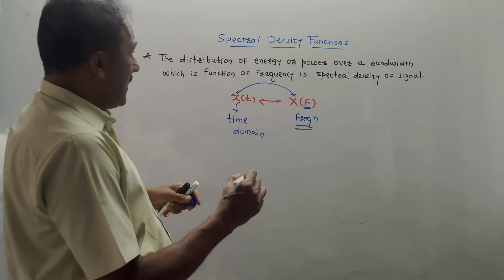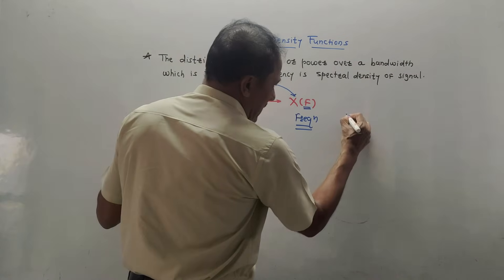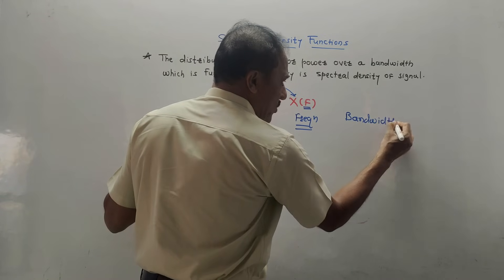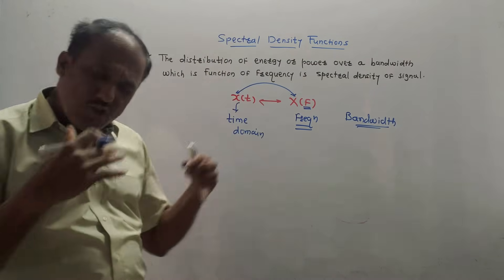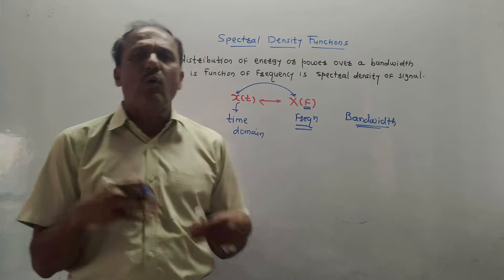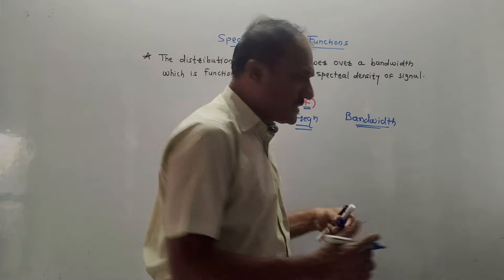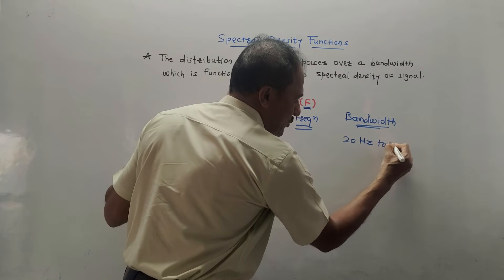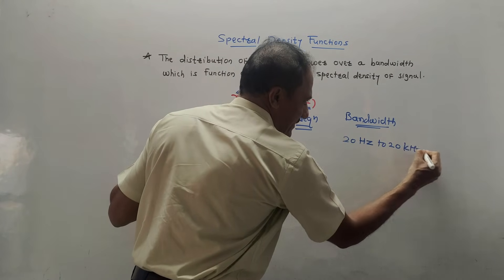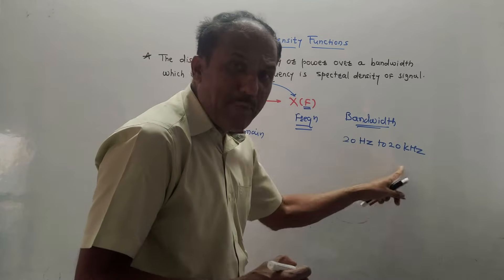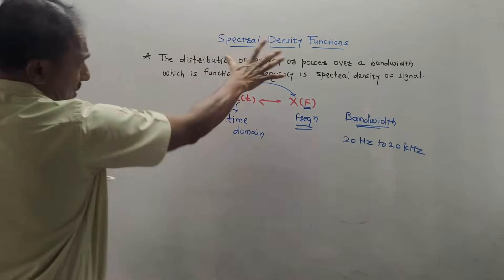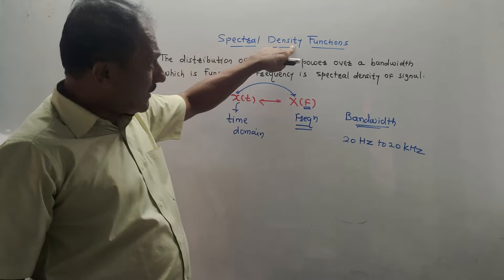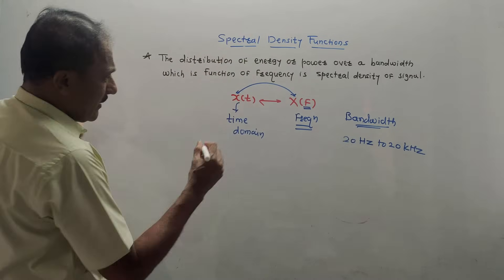This convention — capital notation indicating a domain change — applies throughout engineering. Whenever you see a capital notation, it indicates the domain has been changed: f indicates the frequency domain, where the reference is frequency, whereas t is the time domain. Another related term is bandwidth: bandwidth is basically the range of frequencies. For example, the frequency range of a speech signal is 20 Hz to 20 kHz — that range is the bandwidth of the signal.